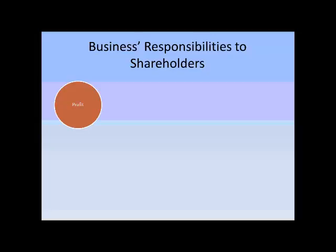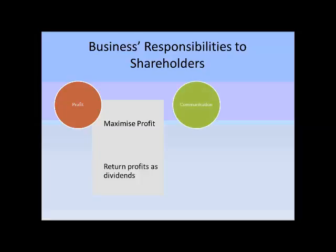A business's number one priority is to increase profits. You need to maximise profit and return those profits as dividends to shareholders. Businesses are also responsible for communicating to shareholders and keeping them informed on how the business is tracking.